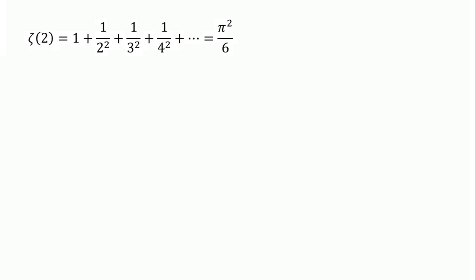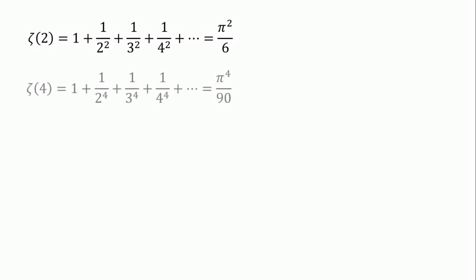For example, by substituting 2 into the function, we get pi squared over 6 — which is surprising. How is this related to a circle? And every even number fed into this function involves pi as a result. Zeta of 4, for example, equals pi to the power of 4 over 90. Similarly, inputs of 6, 8, and 10 all involve pi as a result.